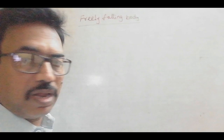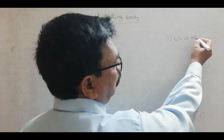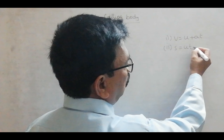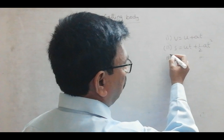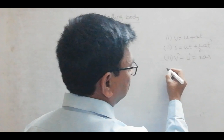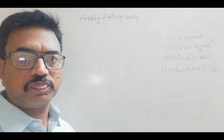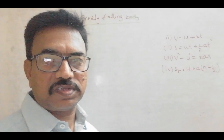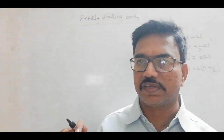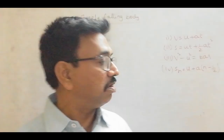We have the basic Kinematic Relations as: V equal to U plus AT; S equal to UT plus half AT square; V square minus U square equal to 2AS; and SN equal to U plus A into N minus 1 by 2. These are the basic Kinematic Relations which I have discussed and derived in the last videos.